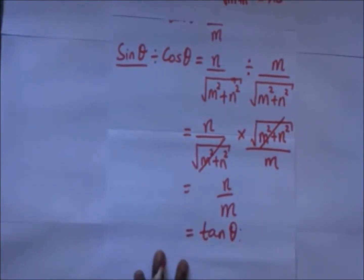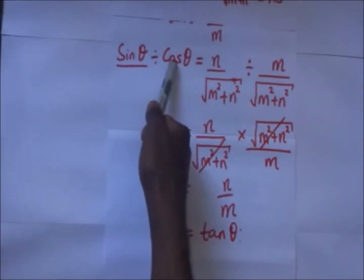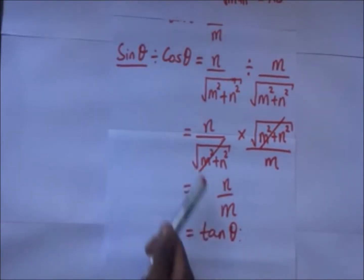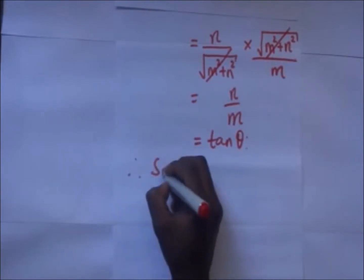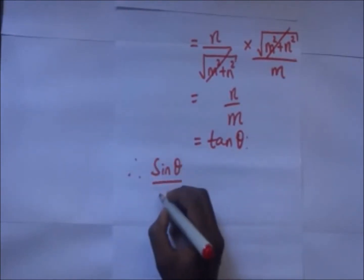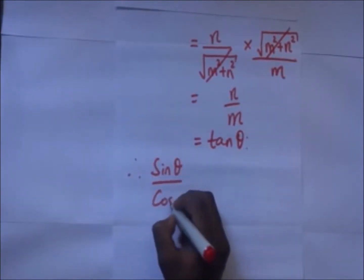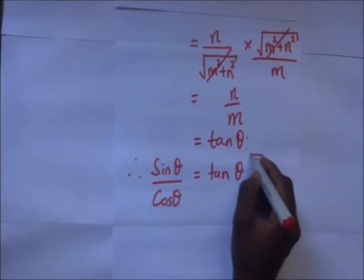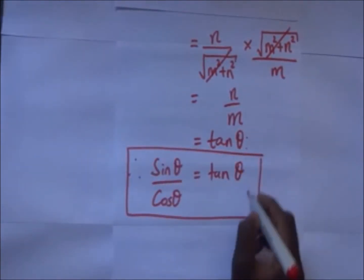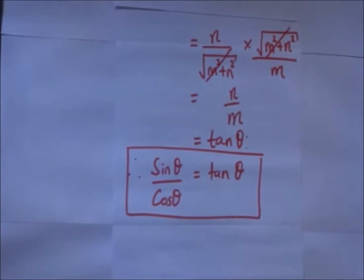So that's where the relationship comes from. Sine theta divided by cos theta is equal to tan theta. Therefore the relationship is that sine of theta divided by cosine of theta will give you tangent of theta. And that is how we derive that relationship. Please remember to share this video on other platforms, subscribe, and hit that like button.